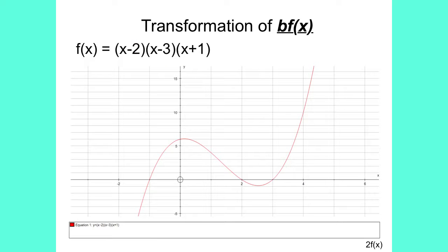The second type of transformation is b times f of x. If we draw the graph of f of x equals x minus 2, x minus 3, x plus 1, you can notice that there are x-intercepts when x is minus 1, x is 2, and x is 3.